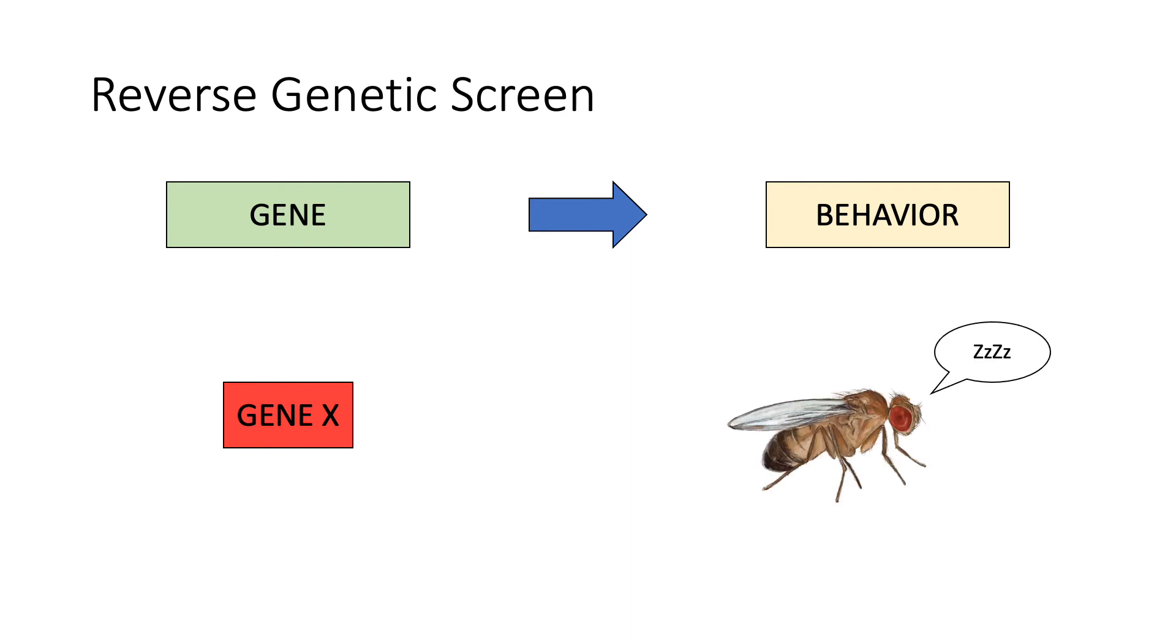The same problem can be addressed using a reverse genetic screen approach, going from a gene of interest to a behavior. Let's say that after doing a literature review, you get to the prediction that gene X is involved in the regulation of fruit flies' sleep behavior. How could we confirm this?